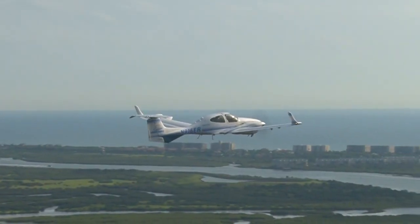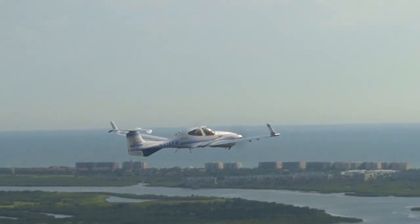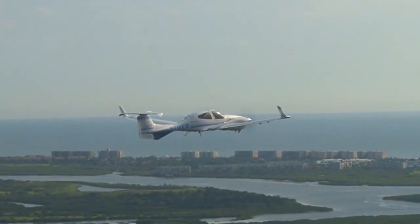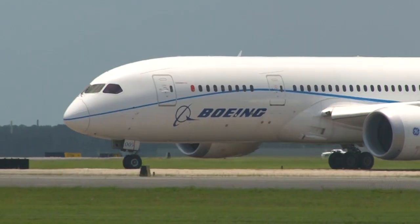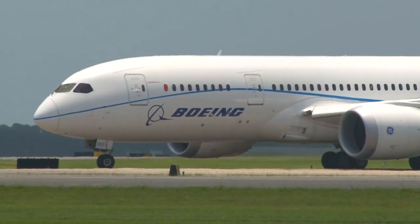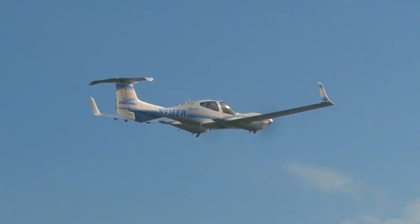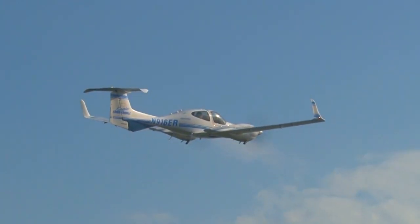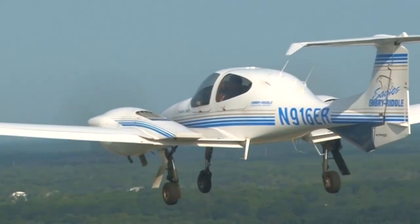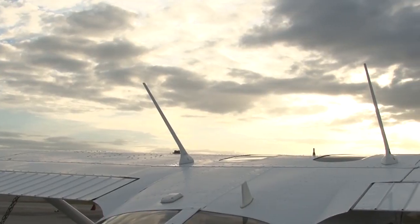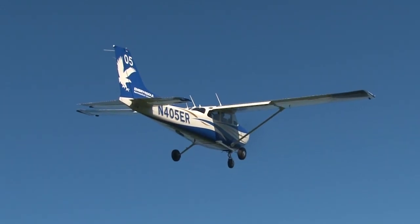Form drag results from the turbulence created as the air tries to flow around the aircraft. Aircraft with larger cross-sections will have higher drag than thinner, more streamlined designs. Other items, like the landing gear and the antennas on the aircraft, will also create form drag.